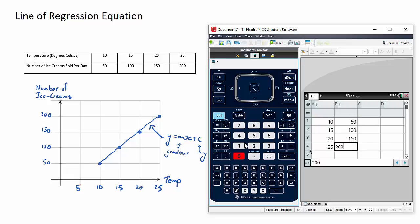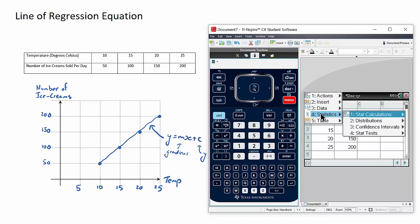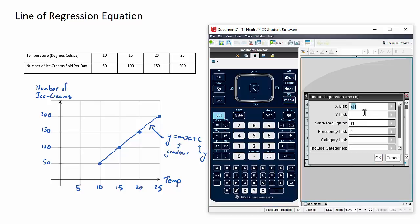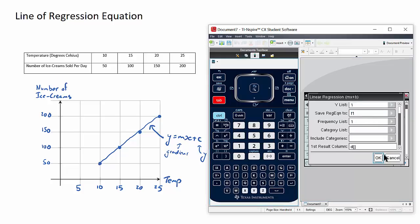Now here's where the stat calculation comes in. I now go up to the top of the next column and the sequence of buttons is: menu, number 4 statistics, number 1 stat calculations. And it's this number 3 here, linear regression mx plus b. We have to define our x list, which in our case will be the top row, and in pretty much all cases will be the top row. So the x list will be T, the y list will be I. And then we can just simply tab down and select OK.